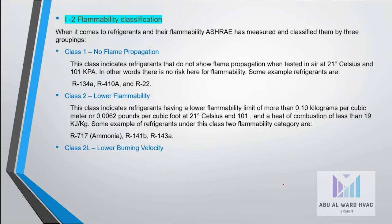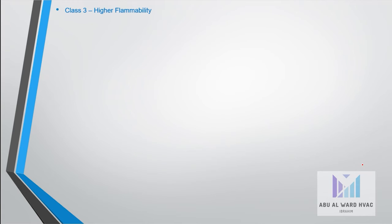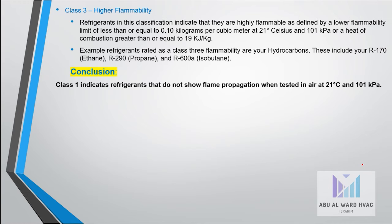Class 2L indicates lower burning velocity, where the burning velocity is less than or equal to 10 cm/s, such as HFO-1234yf, which is used as an automotive refrigerant. Class 3 is higher flammability: refrigerants in this classification are highly flammable, as defined by a lower flammability limit less than or equal to 0.1 kg/m³ at 21°C and 101 kPa.